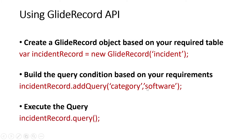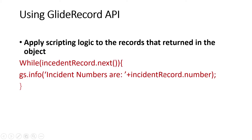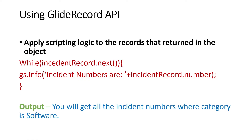After writing the query, you have to execute it. To execute, we write incidentRecord.query() — this is another method. So what we're doing is: create the object, call addQuery to define the filter, then call query() to execute it. After getting the records back, we apply script logic — a while loop — to iterate through all records where category is software and print their incident numbers.